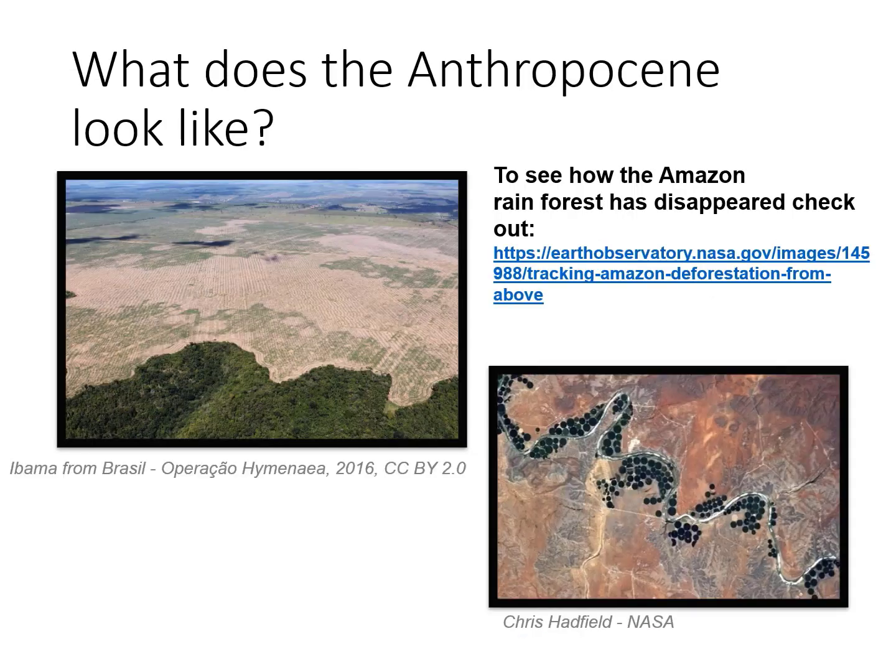These two images, all taken from space, provide examples of how humans have altered the lithosphere, biosphere, hydrosphere, and atmosphere. The first image is from Brazil, showing the removal of Amazonian rainforest.